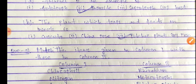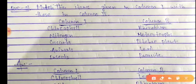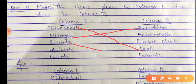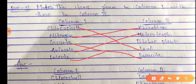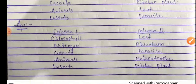Come to the next one — match the items given in column one with those in column two. Chlorophyll is matched with leaf, nitrogen with rhizobium, Cuscuta with parasite, animals with heterotrophs, and insects with pitcher plants.